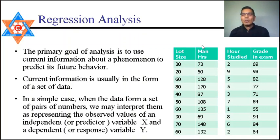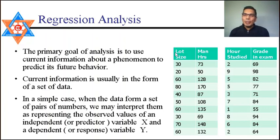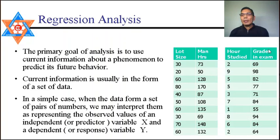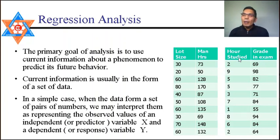One variable is the dependent variable and the other is the independent variable. The variable which affects the other is the independent variable. For example, with study hours and grade in examination, grade in exam depends on study hours. So study hours is the independent variable and grade in exam is the dependent variable. In simple linear regression, there will be paired observations under analysis.